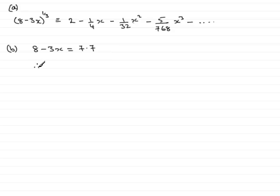So if I subtract 7.7 from both sides and add 3x to both sides, I get 8 take away 7.7, which is 0.3 equals 3x. And clearly, if I divide both sides by 3, I get that x equals 0.1.